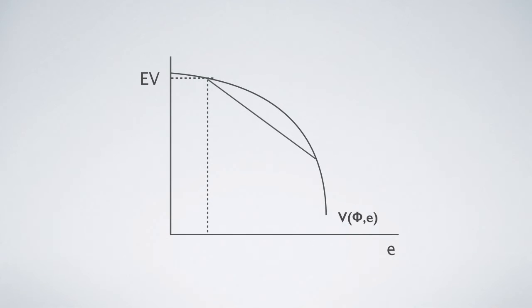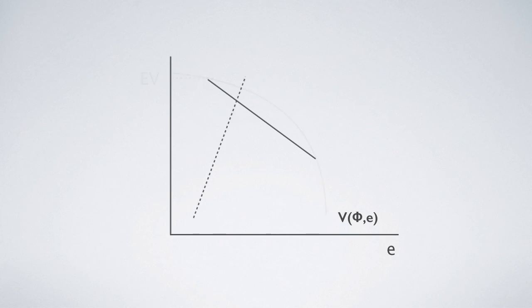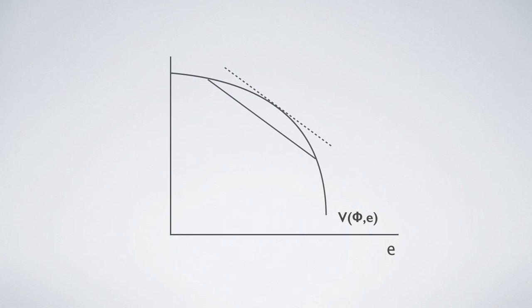Maximum expected utility, if any, must be a corner solution. But there is no tendency or first-order condition like this.